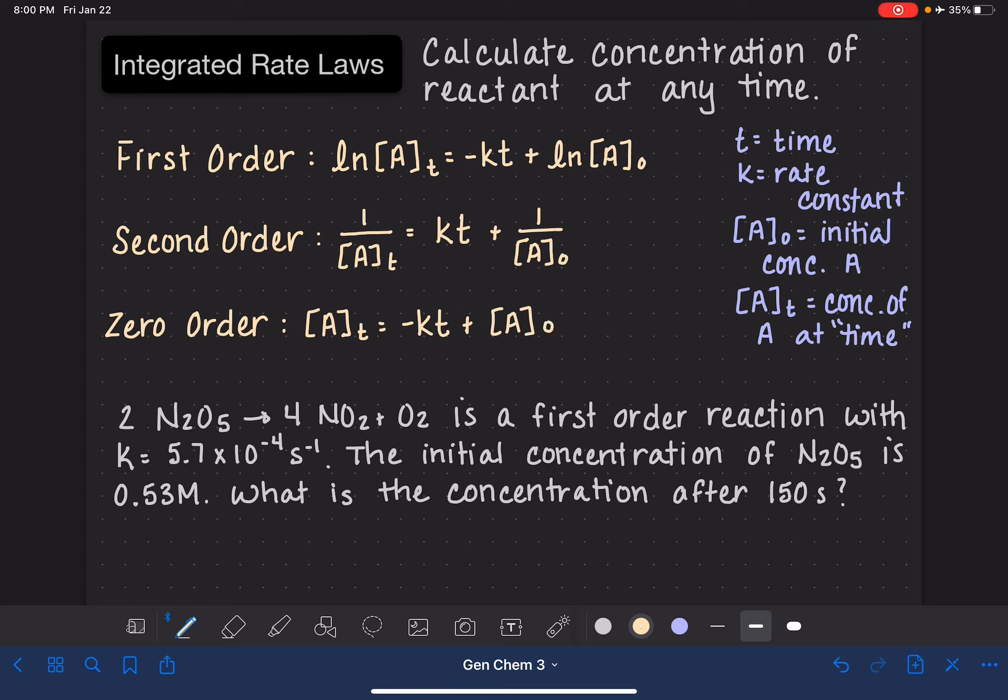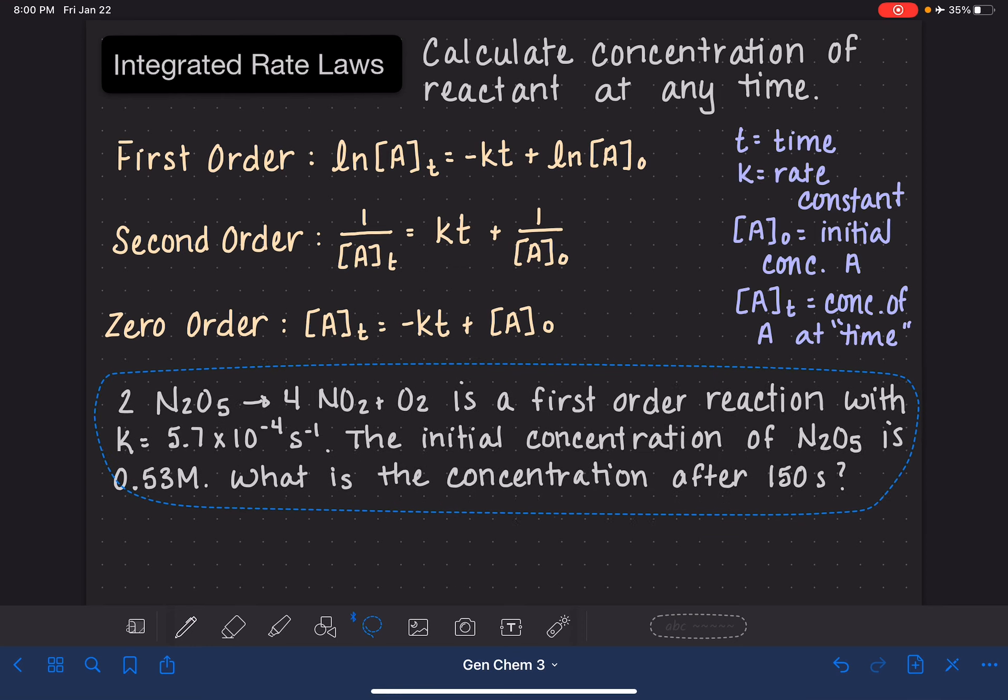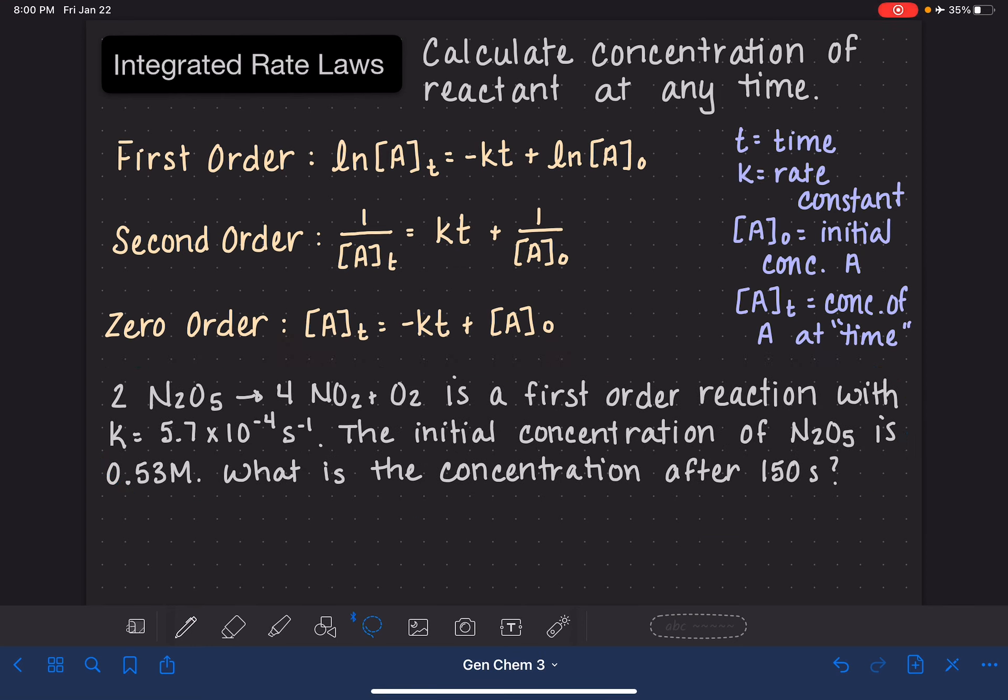So typically with using the integrated rate laws, you're given all but one of these variables. Maybe you're given the rate constant, the time, and the initial concentration, and you're being asked to solve the concentration at a particular time. And that's what we have in this practice problem.